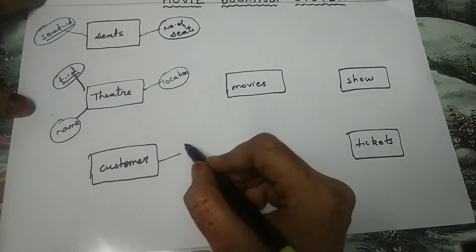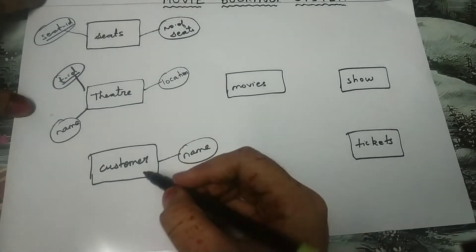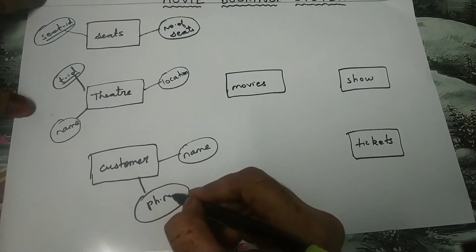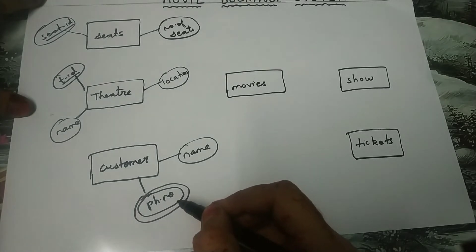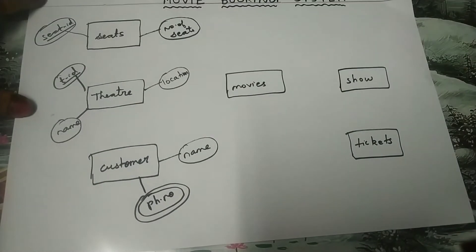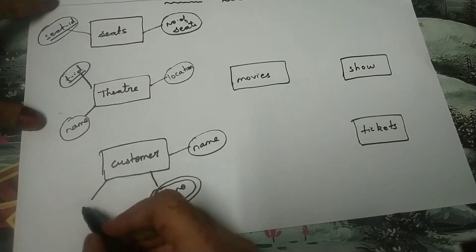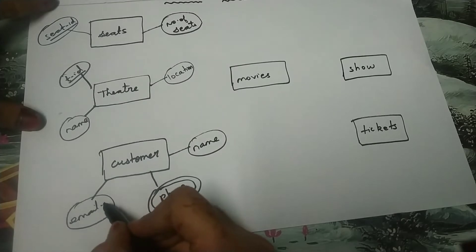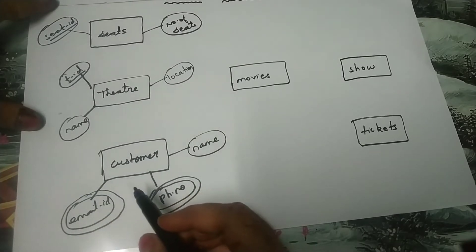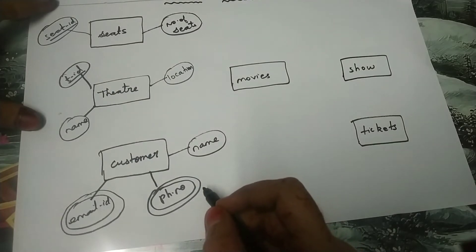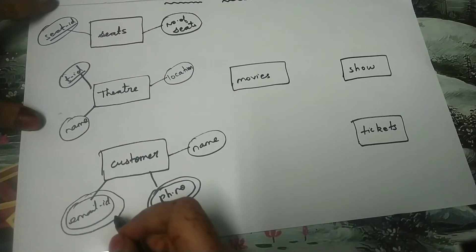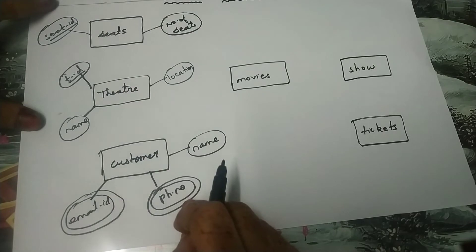The customer's attributes are: name, phone number, and email ID. Phone number must be written inside a double oval because a customer can have more than one phone number — it is a multi-value attribute. Similarly, email ID must also be written inside a double oval because a customer can have more than one email ID. Therefore, email ID and phone number are known as multi-value attributes.